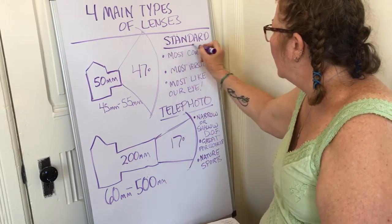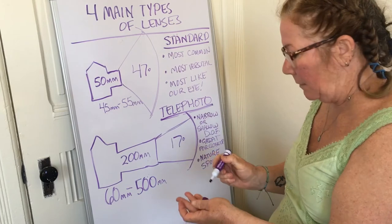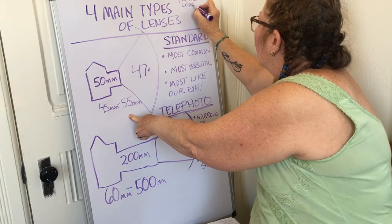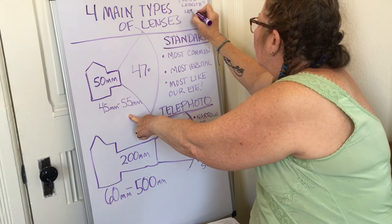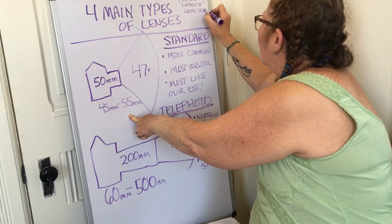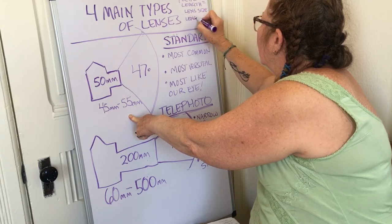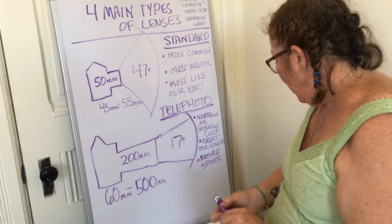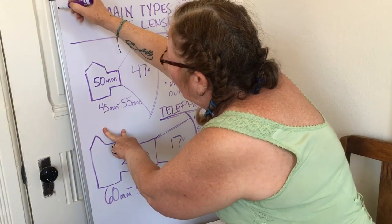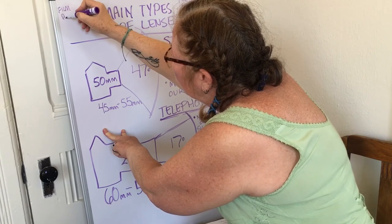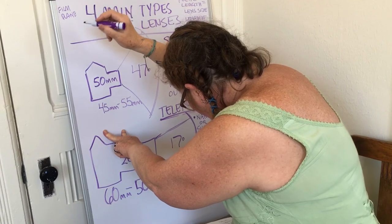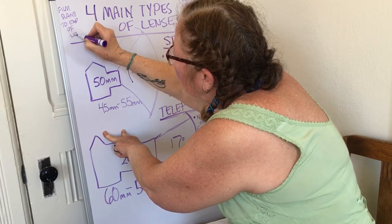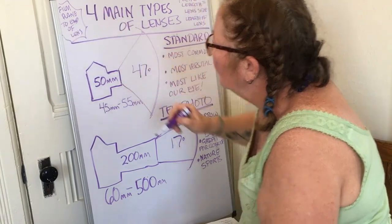So far we've talked about standard and telephoto lenses. Just to remember: focal length equals lens size, or the length of the lens, and it's measured from the film plane to the front of the lens.